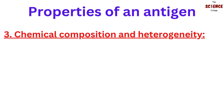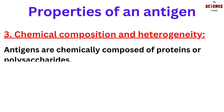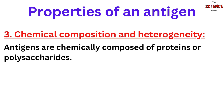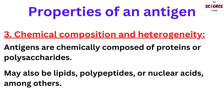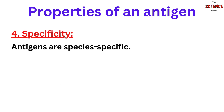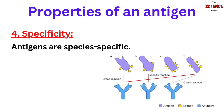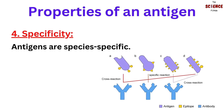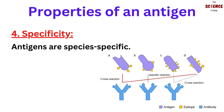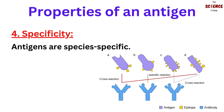The third property is chemical composition and heterogeneity. Antigens are chemically composed of proteins or polysaccharides, but may also be lipids, polypeptides, or nucleic acids, among others. The more chemically complex they are, the more immunogenic they will be. The fourth property is specificity. Antigens are species-specific. Tissues of all individuals in a species possess certain species-specific antigens, but some degree of cross-reaction occurs between antigens from related species.